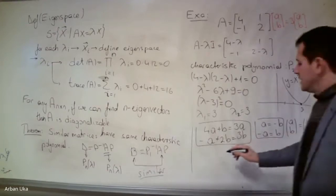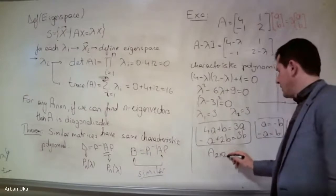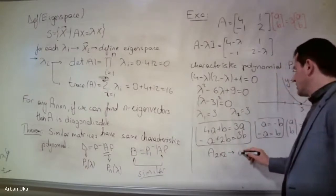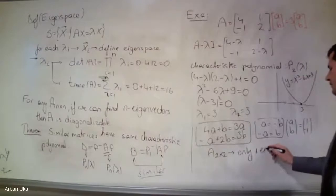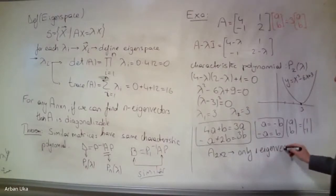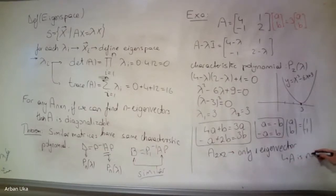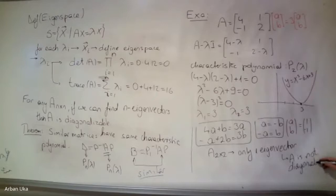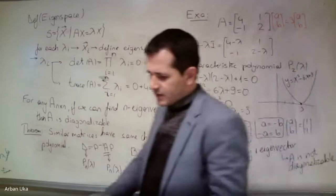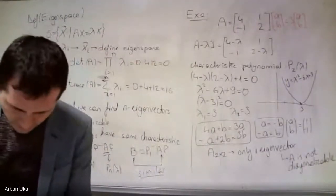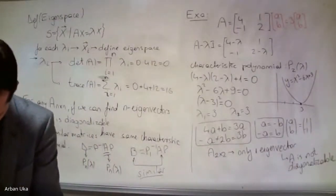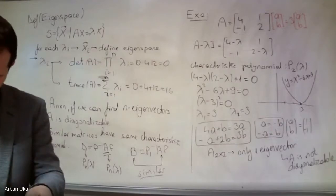The matrix A is 2 by 2, so we need 2 eigenvectors for it to be diagonalizable. Since we can find only one eigenvector, which is [1, -1], we say that A is not diagonalizable.